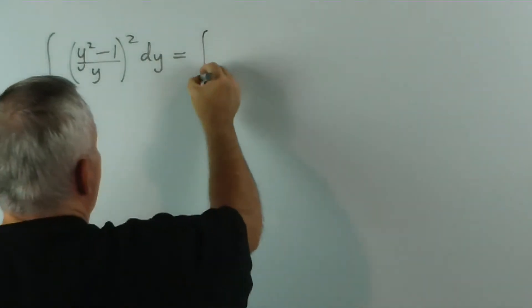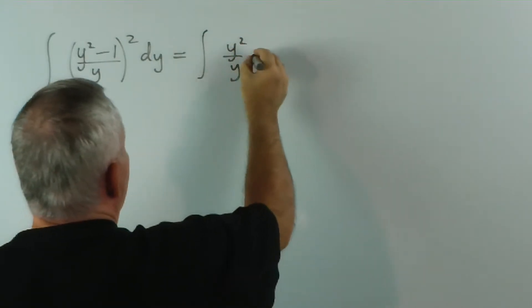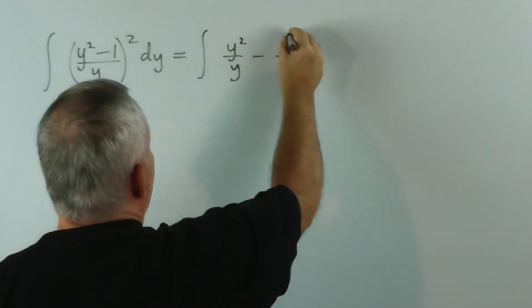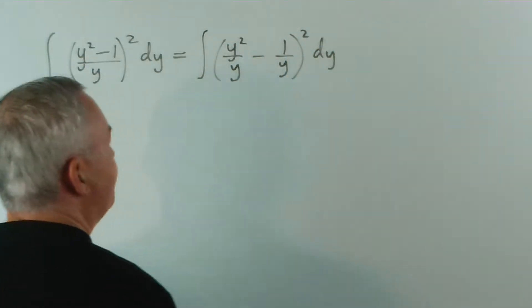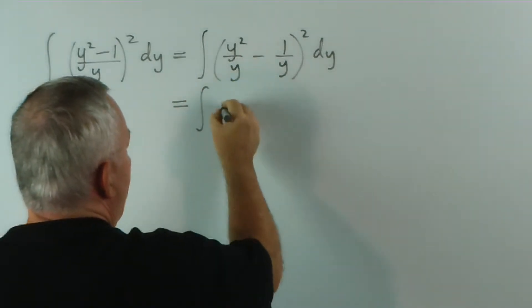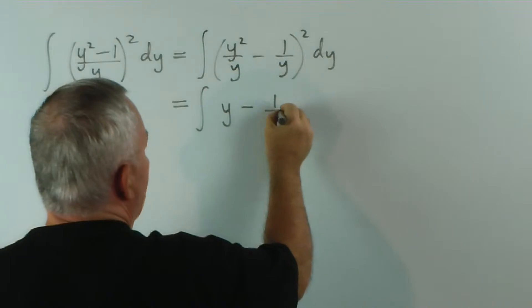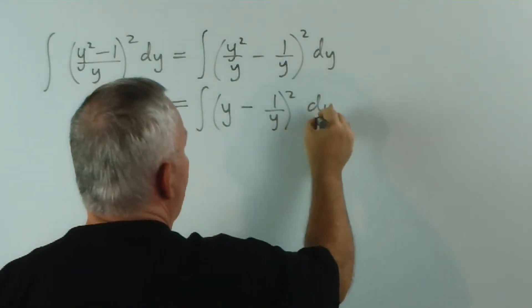So we would get y squared on y minus 1 on y all squared dy. This, of course, is the integral of y minus 1 on y all squared dy.